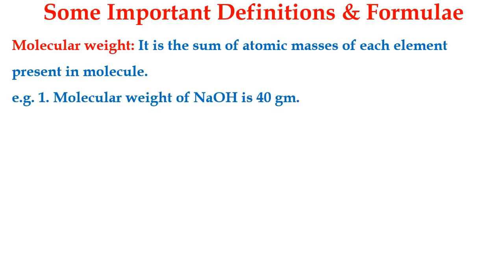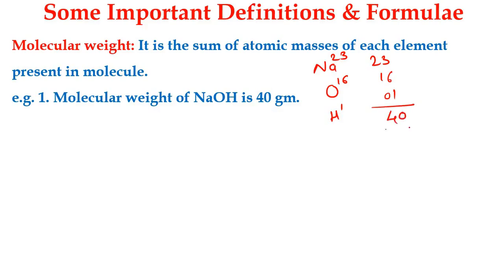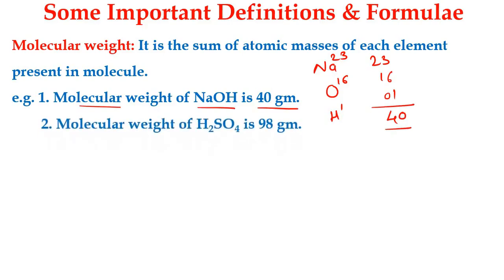We will see one example — molecular weight. It is the sum of atomic masses. For sodium hydroxide, the molecular weight is 40: sodium is 23, oxygen is 16, and hydrogen is 1, totaling 40 grams. Similarly, the molecular weight of H2SO4 is 98 grams.